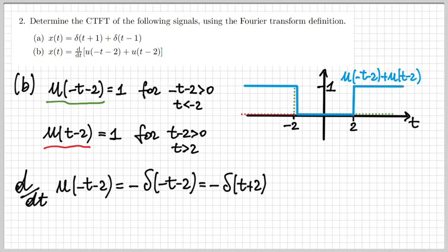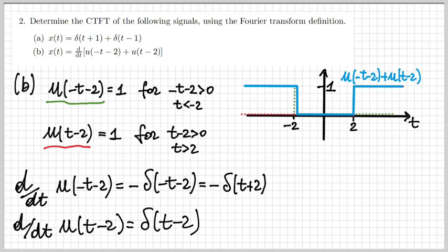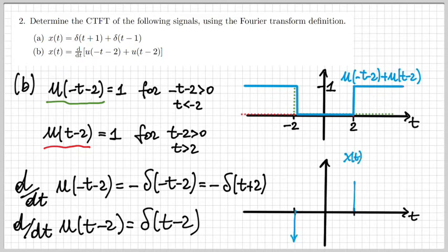I compute the derivative separately using linearity. The derivative of the first (green) step function is a negative delta centered at t equal minus 2. The derivative of the second (red) step function is a positive delta centered at t equal plus 2. We could have drawn this directly, knowing we just need to place a delta wherever a discontinuity occurs, with amplitude equal to the size of the discontinuity. So x of t is two pulses — one at minus 2 and the other at plus 2 — with opposite sign.